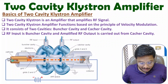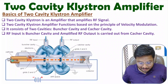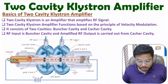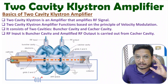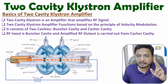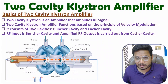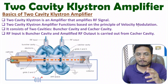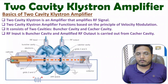During that acceleration, we have two cavities. The first cavity is the buncher cavity connected with RF input, and the second cavity is the catcher cavity connected with RF output. At the RF output, we have an amplified signal, based on the principle of velocity modulation, which I will explain in the Applegate diagram.